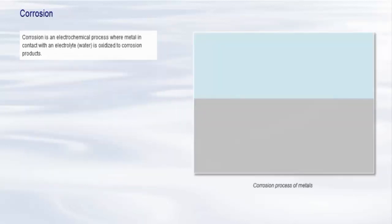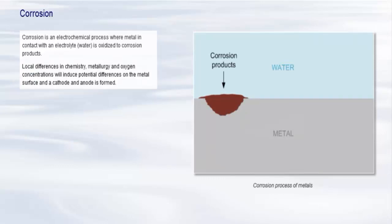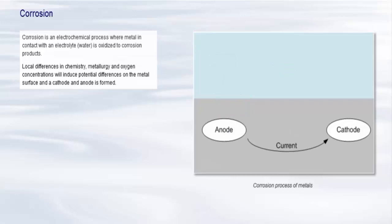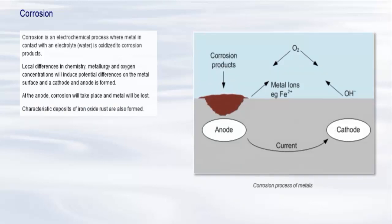Corrosion is an electrochemical process where metal in contact with an electrolyte, water, is oxidized to corrosion products. Local differences in chemistry, metallurgy, and oxygen concentrations will induce potential differences on the metal surface and a cathode and anode is formed. At the anode, corrosion will take place and metal will be lost. Characteristic deposits of iron oxide rust are also formed.